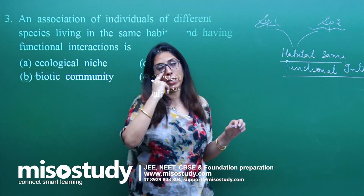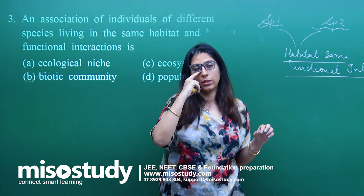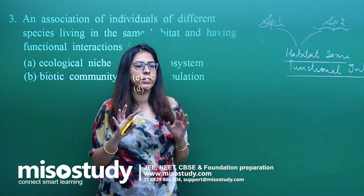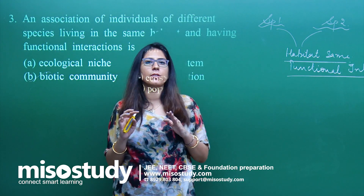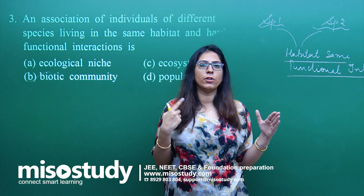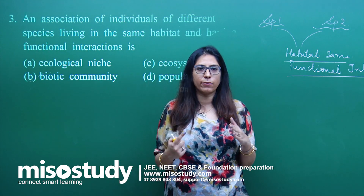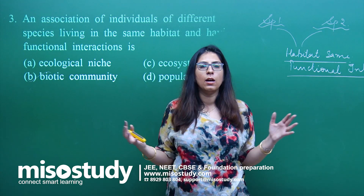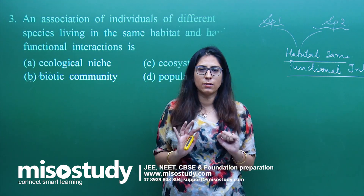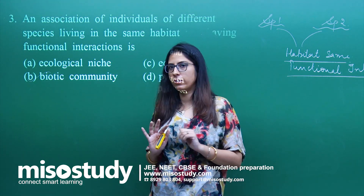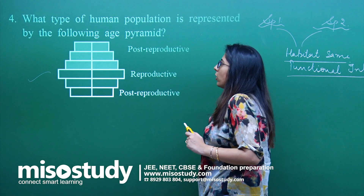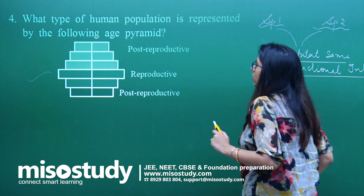This is termed as a biotic community. I will go for option A — biotic community. This is a very easy question. It is just that you should have knowledge about all the different hierarchy categories — their definitions and how we can group them. That should be clear in your minds. Let us proceed towards the fourth question.